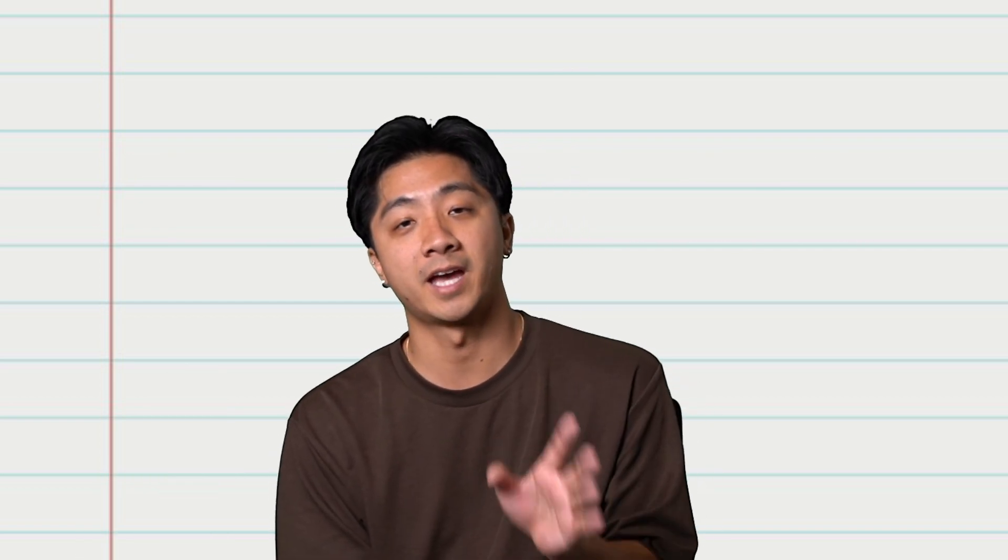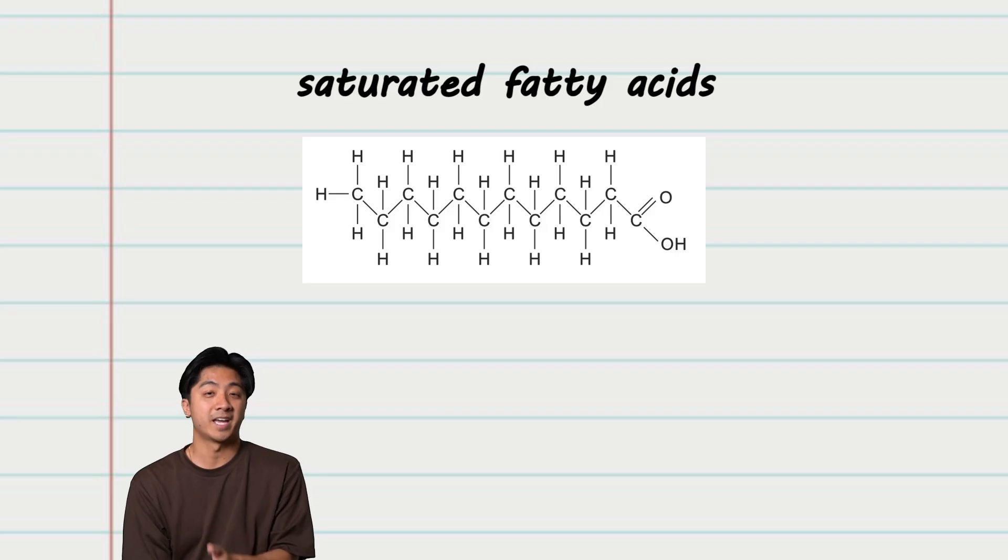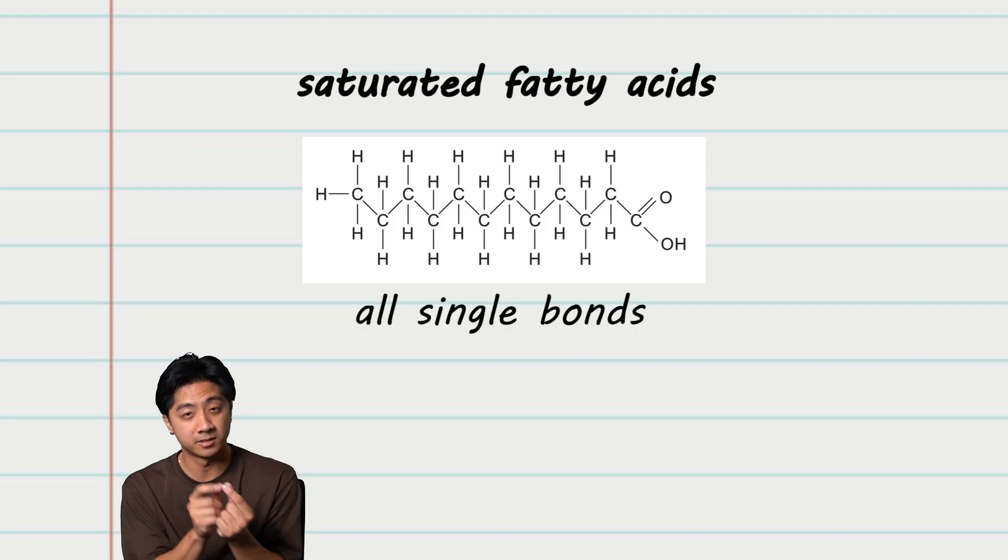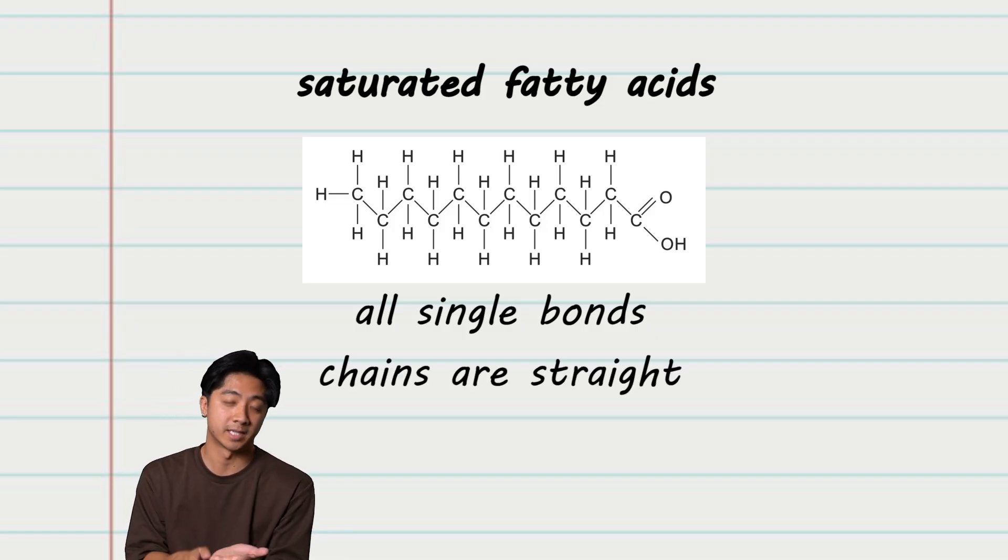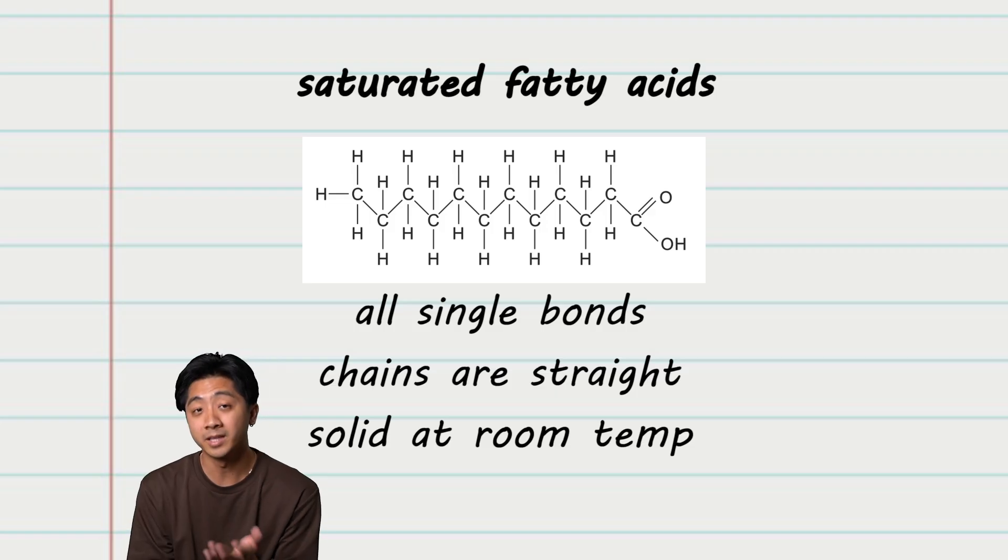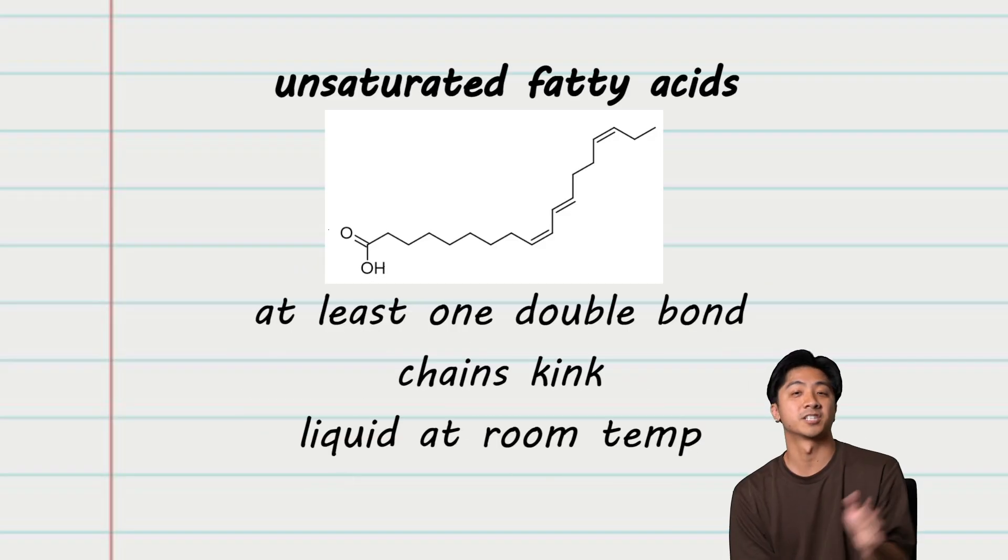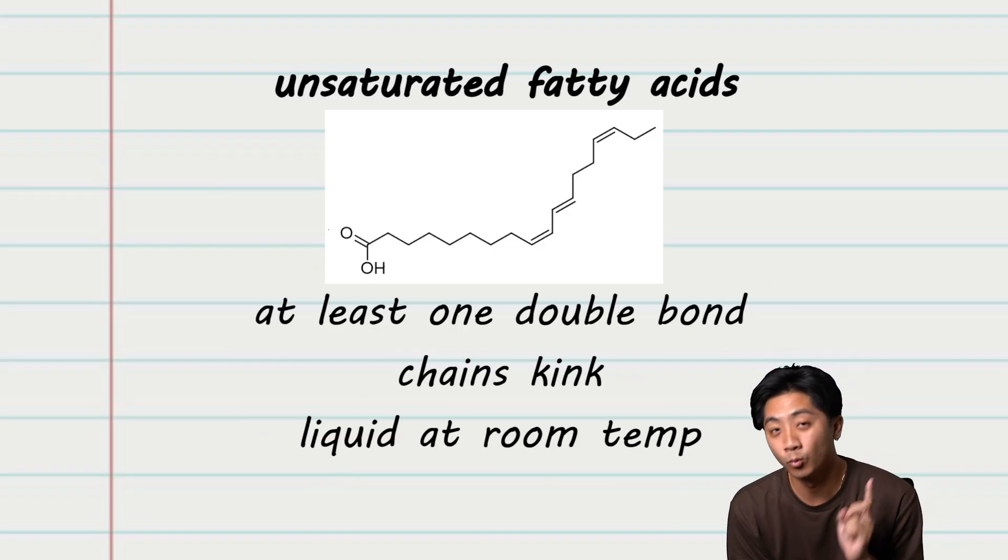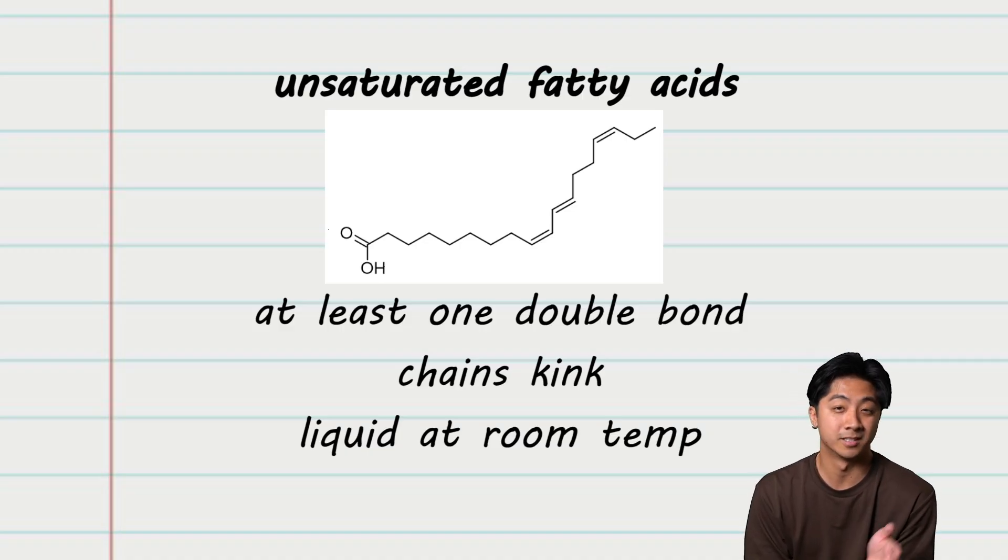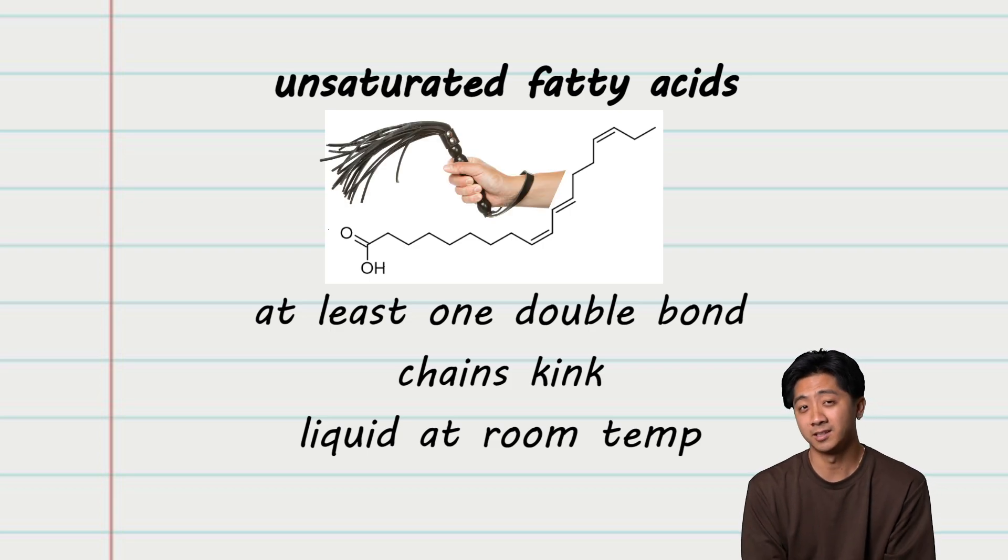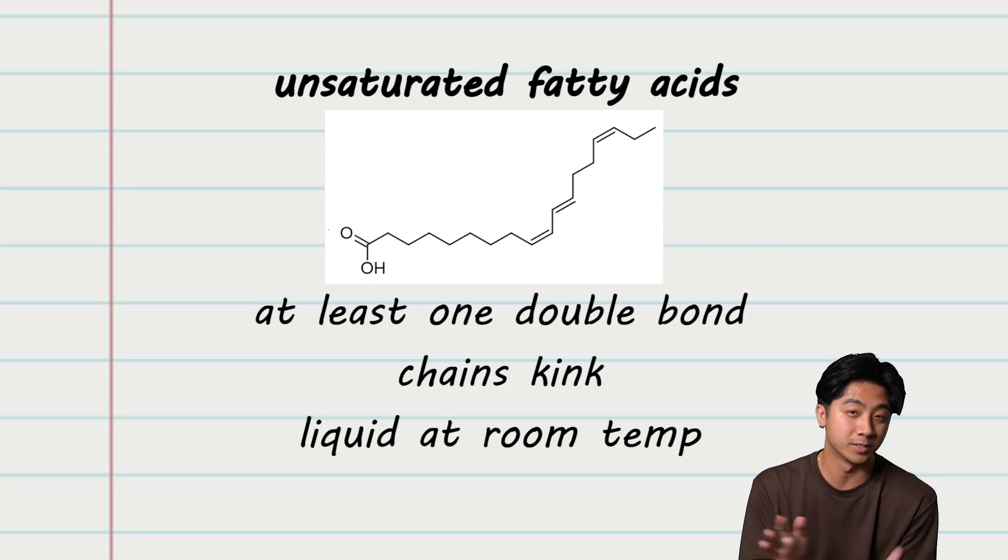Now there are two types of fatty acids: saturated and unsaturated. Saturated fatty acids only have single bonds between their carbon atoms. This causes the chains to be straight. So at room temperature, these lipids can actually stack on top of each other, making them solid. But you want to see something kinky? Unsaturated fatty acids have at least one double bond between the carbon atoms. This causes the chain to bend or kink. The more double bonds the chain has, the more kinky it is. So at room temperature, if you have a bunch of lipids with unsaturated fatty acids, they won't be able to stack on top of one another, and this will make them liquid.